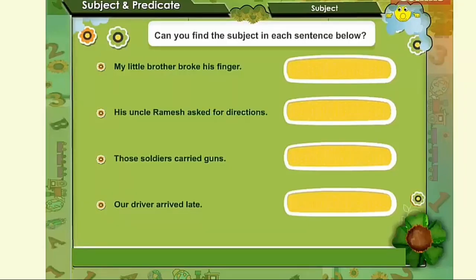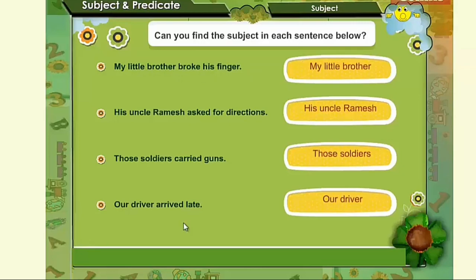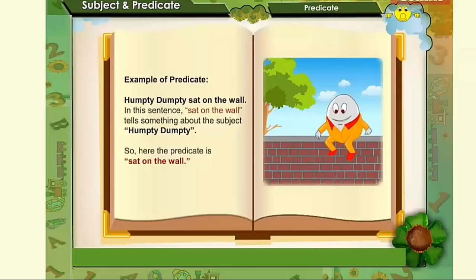Can you find the subject in each sentence below? Examples of predicate: Humpty Dumpty sat on the wall. In this sentence, 'sat on the wall' tells something about the subject, Humpty Dumpty. So here the predicate is 'sat on the wall.'